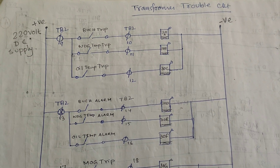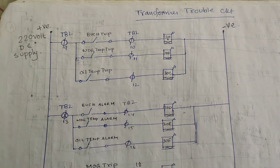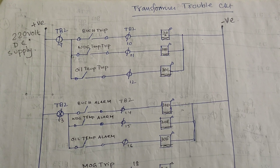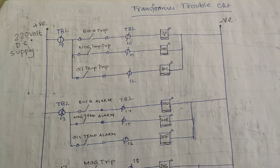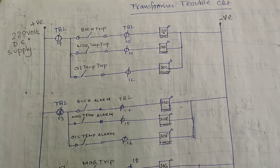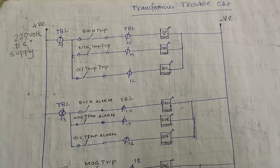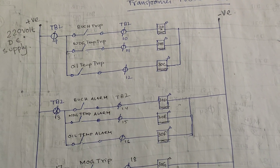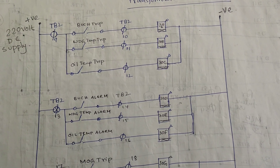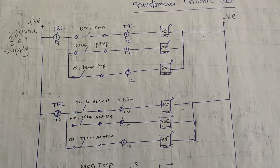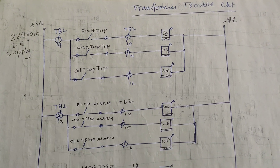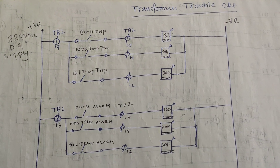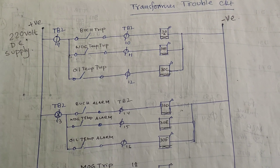Inside the power plant there are transformers called GT — Generator Transformers. These are step-up transformers. If the generation is at 11kV, it is stepped up from 11kV to 400kV, 11kV to 220kV, or 11kV to 132kV, as per the requirement and transmission line distance.